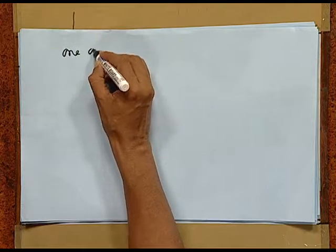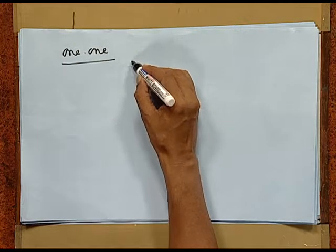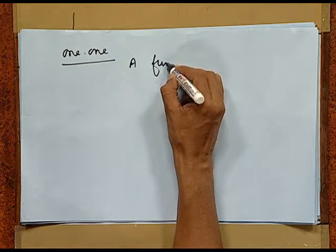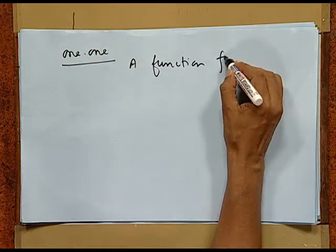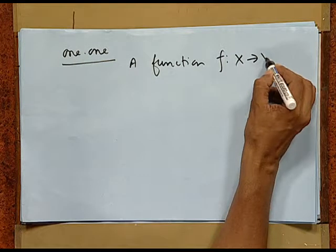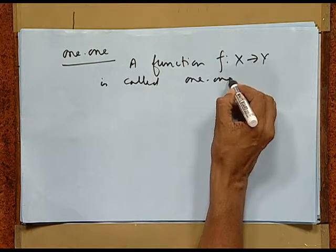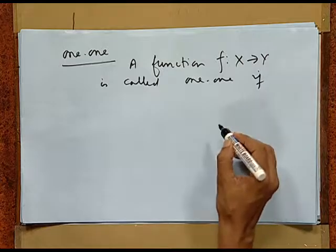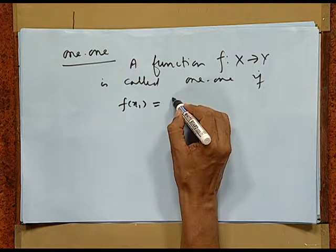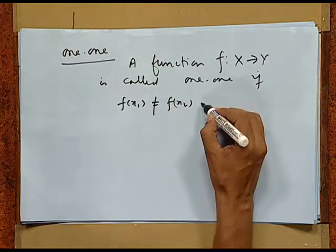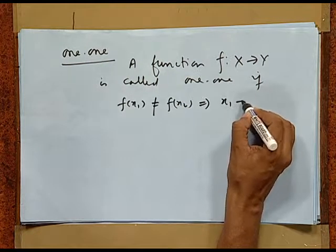Now, we define what is known as one-one function. A function f from X to Y is called one-one if different elements have different images. That is, f(x1) = f(x2) implies x1 = x2.